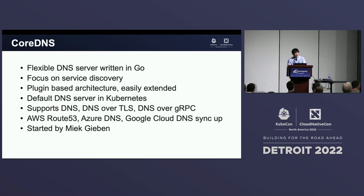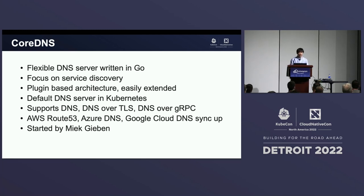One of the most important features of CoreDNS is that CoreDNS is the default DNS server in Kubernetes. So I guess anyone using Kubernetes will use CoreDNS by default. In addition to being served as the default DNS server, CoreDNS also supports different protocols. It supports DNS, DNS over TLS, DNS over HTTPS. It also supports additional protocols like DNS over QUIC.